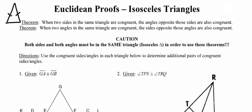The angle that's opposite from that left leg is going to be the right base angle. The angle opposite or across from the right leg is going to be the left base angle. So essentially, that's what that first theorem is saying.